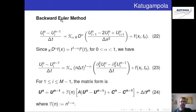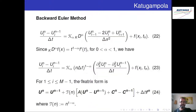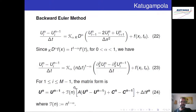Chegamos ao Katugampola, que é um operador local, diferentemente dos dois anteriores. Aqui precisamos somente usar as diferenças recuadas para calcular a aproximação da derivada fracionária, que para o caso particular entre α e 1 fica desta forma. Os vetores e a matriz são os mesmos do Riemann-Liouville. Por ser um operador local, ele depende somente dos valores no nível anterior, diferentemente do Riemann-Liouville e do Caputo-Fabrizio.